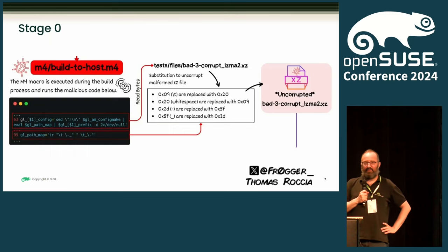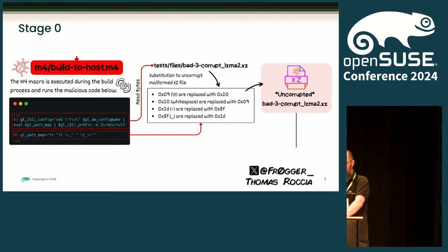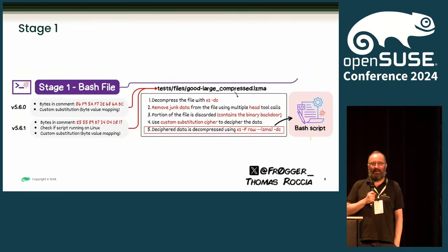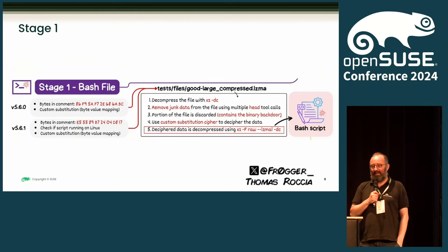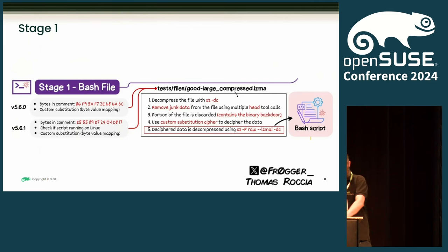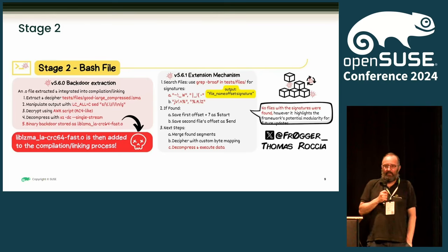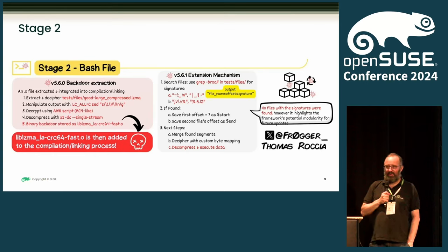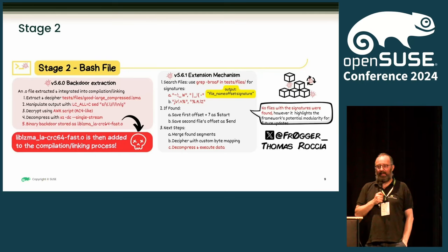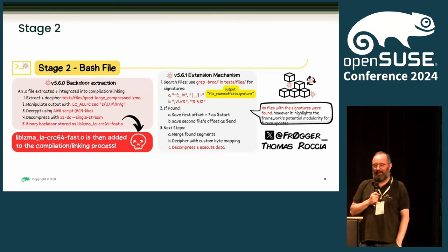What it does: it takes one of the test suite files, replaces some characters, and decompresses it for a first-stage loader. The first-stage loader is another bash file, now less obfuscated, that takes yet another test suite file, decompresses that, and then has a second-stage backdoor loader. The second-stage file actually builds new .o files and inserts a binary backdoor into this .o file and hooks it into the liblzma library build, including decryption. As I saw it the first time, it was quite obvious that it was a very sophisticated backdoor.